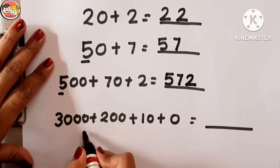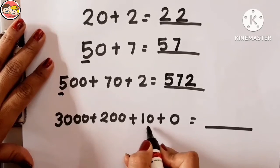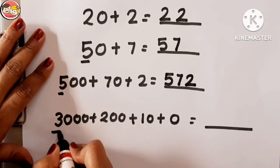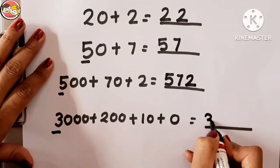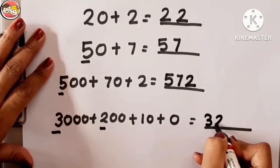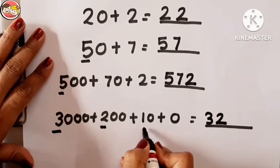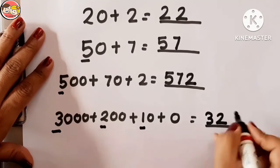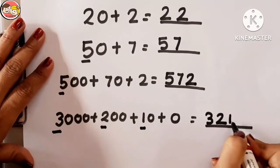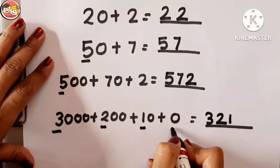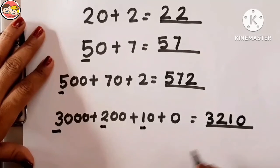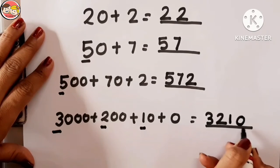One more example: 3,000 + 200 + 10 + 0. How many thousands are there? 3 — so write 3. How many hundreds? 2 — so write 2. How many tens? 1 — so write 1. How many ones? 0 — so write 0. So the short form is 3,210.